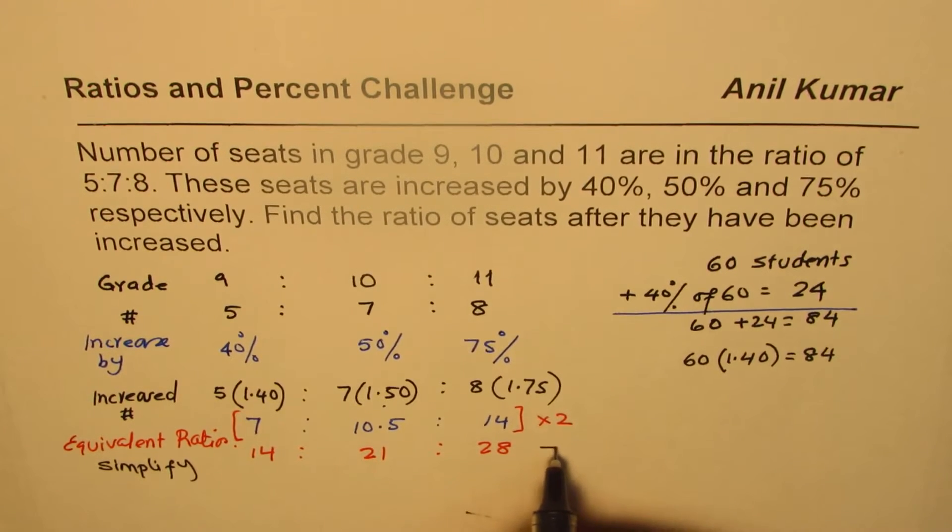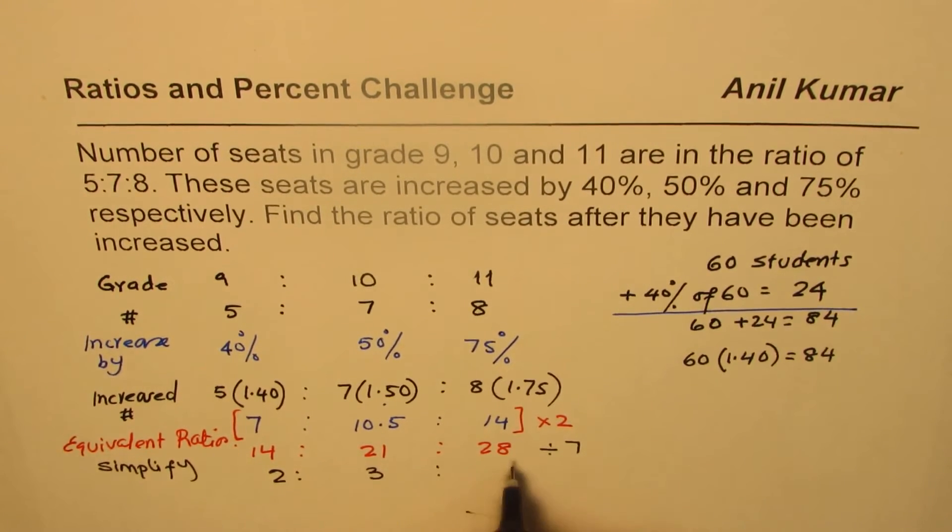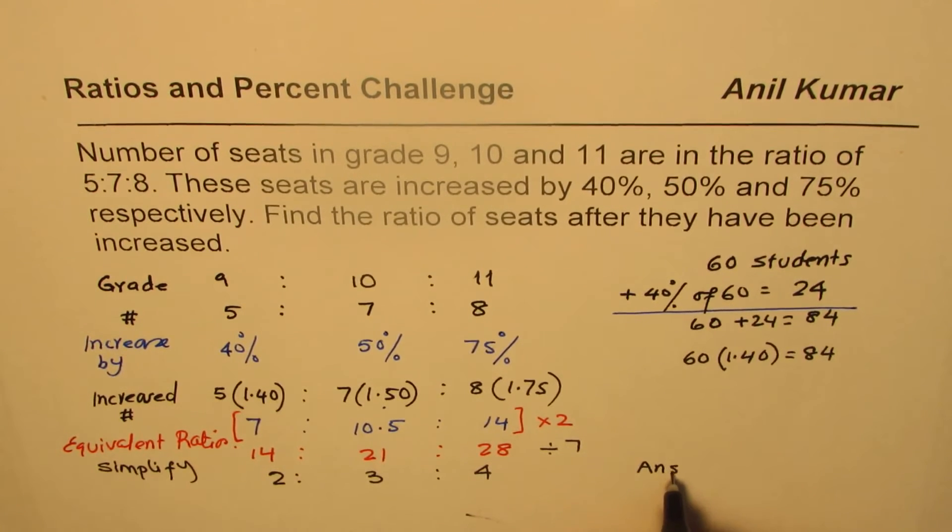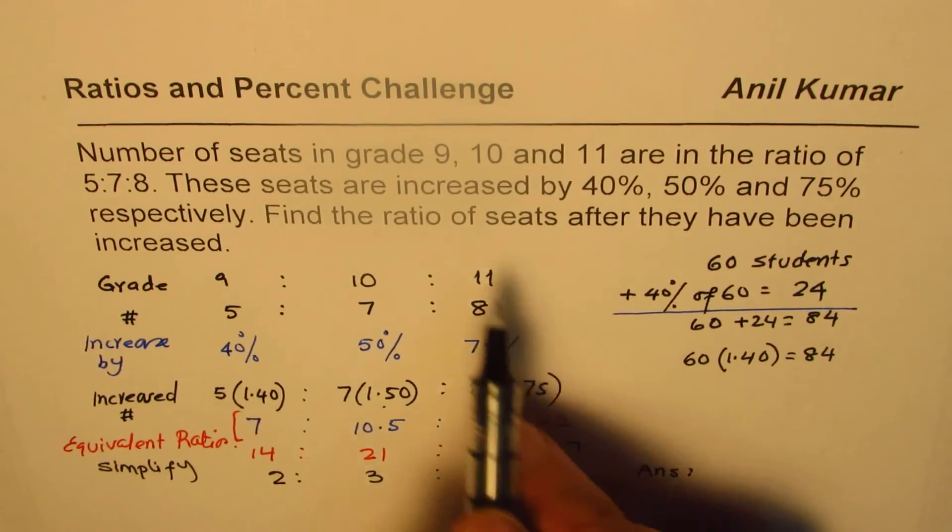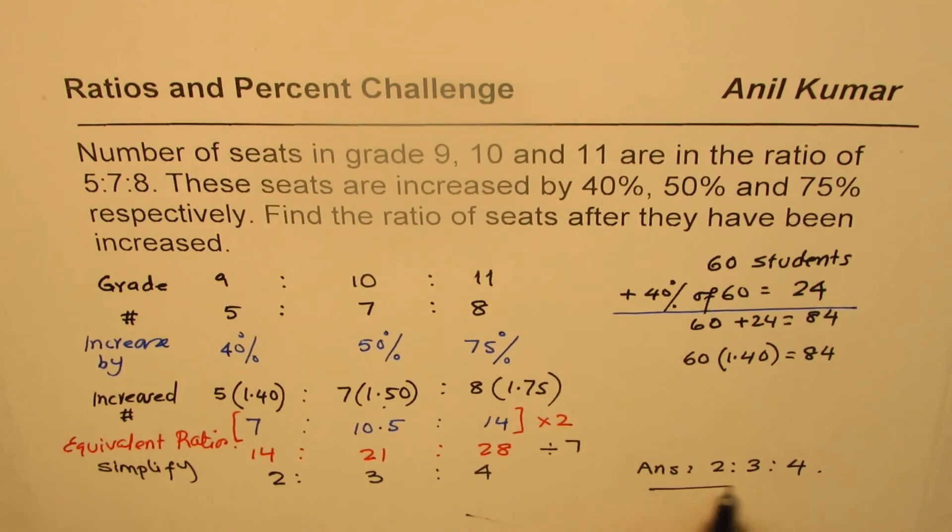We can simplify it by dividing all by 7. 7 times 2 is 14. 7 times 3 is 21. 7 times 4 is 28. So the increased ratio will be 2 is to 3 is to 4. You get an idea? So that's our answer. So our answer is that the increased ratio for grade 9, grade 10 and grade 11 students will be 2 is to 3 is to 4. Correct? So that is how you can do this question.